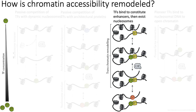A third approach is through transcription factors binding to and recognizing enhancers that are constitutively open. Certain strong enhancers might have a relatively strong transcription factor — labeled here as TF prime — bound to that enhancer, essentially keeping it in an open chromatin state. Some additional transcription factor may then come in, bind to this enhancer, and recruit additional chromatin remodeling factors to further open up the region for transcription.